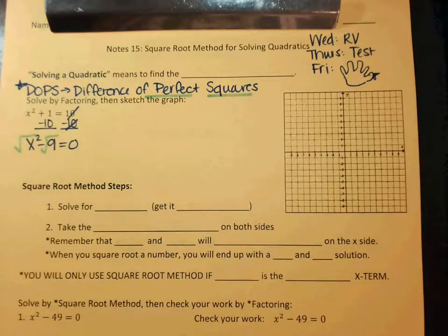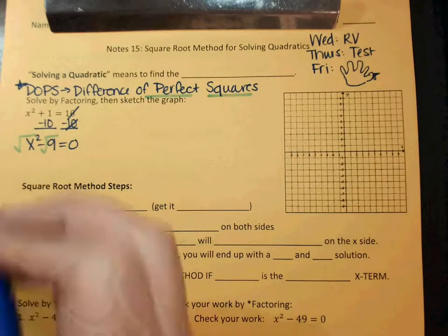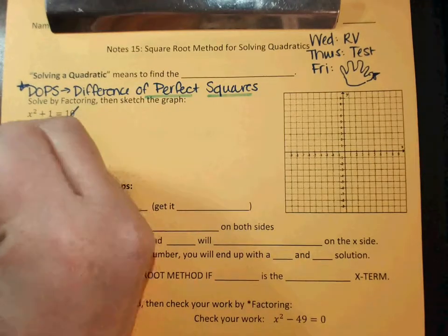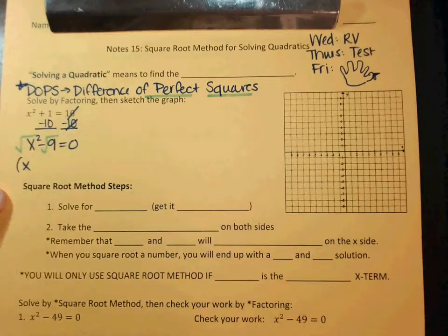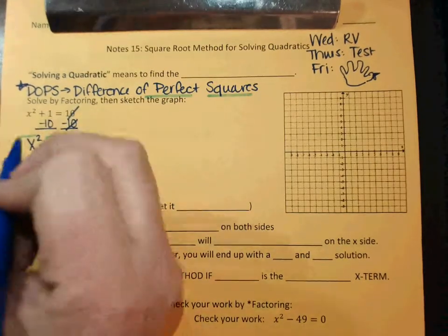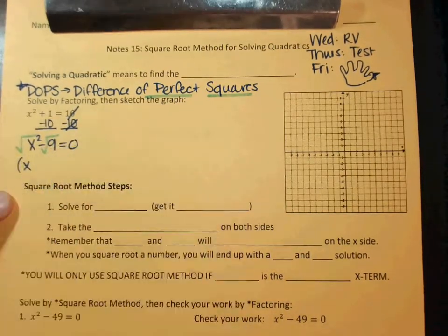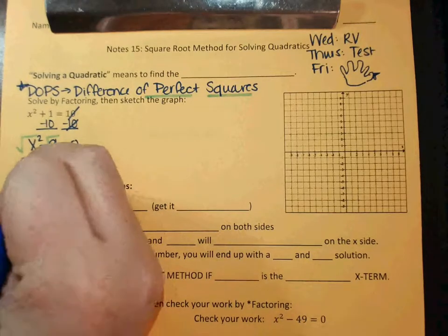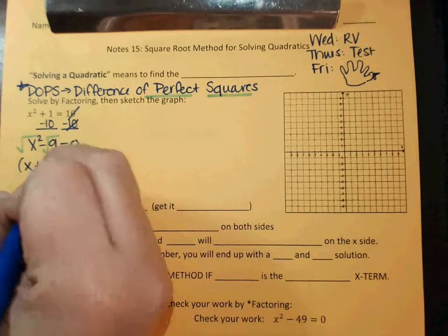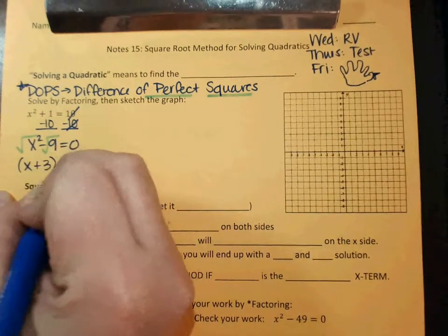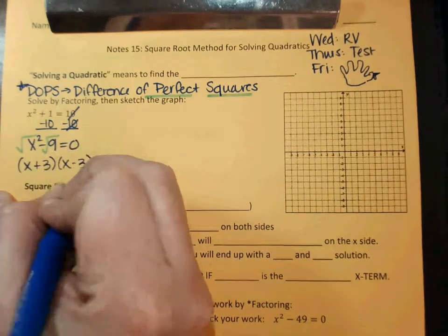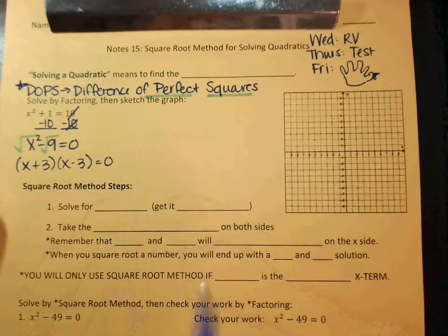What is the square root of X squared? X. What's the square root of 9? Plus or minus 3, right? So we would do a plus 3 and a minus 3.